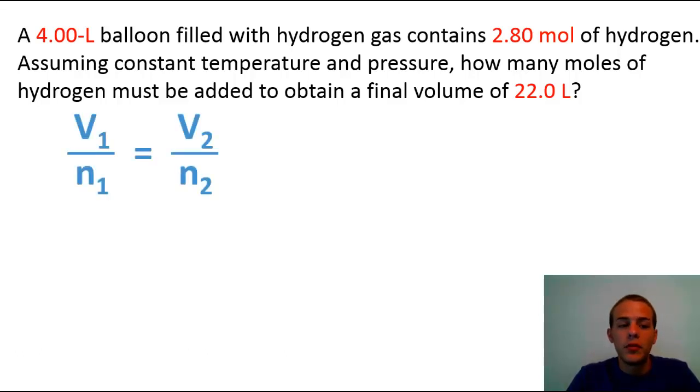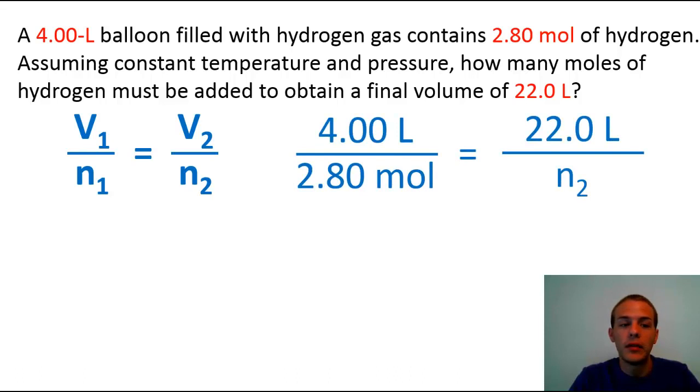So again, we're going to use that relationship, that equation V1 over n1 equals V2 over n2. So if we plug in our values, we're going to get something that looks like this. So here we are assuming that the 4 liters and the 2.80 moles are V1 and n1 respectively. And then we're assuming that that larger volume, that 22.0 liters, that's V2. And then n2 is the one that we're trying to figure out.